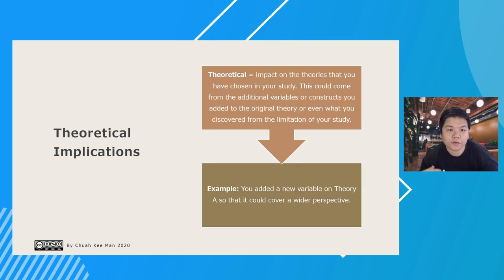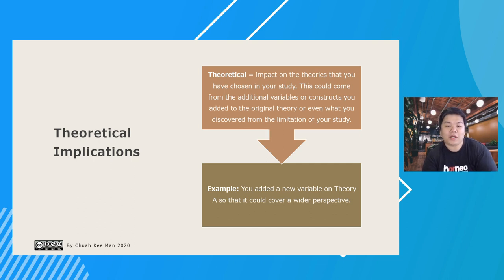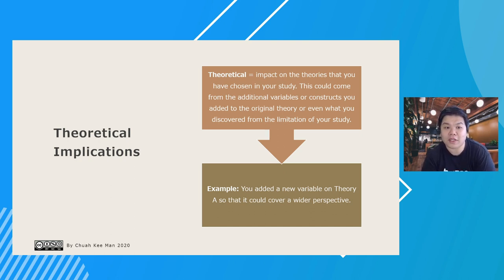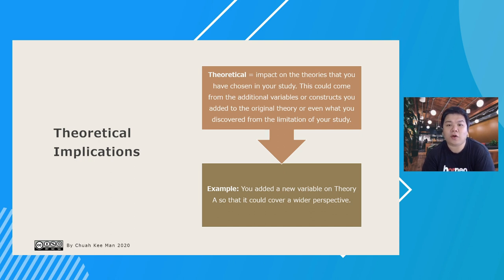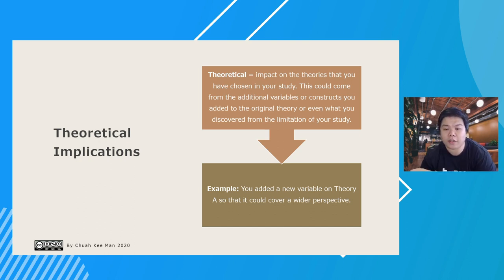As for theoretical implication, it's the contribution or impact on the theory itself. This could come from additional variables or constructs you added to the original theory, or from what you discovered through the limitations of your study. For example, if you added a new variable to Theory A to cover a wider perspective, you mention how your findings inform people about how the theoretical framework could be improved. It's about what your study contributed to the understanding of the framework or theoretical foundation chosen.